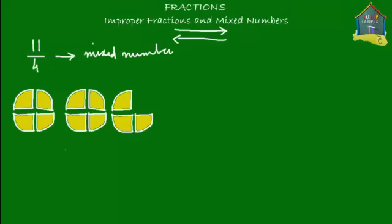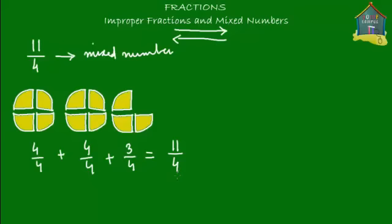How many pizzas do we have? This is 4 upon 4 — all 4 slices in this pizza are your share. Plus all 4 slices in the second pizza are also your share. Plus 3 out of the 4 slices in the third pizza, which is 3 upon 4. Together, your share is 4 plus 4 plus 3, which is 11 upon 4, because each pizza is made of 4 slices.